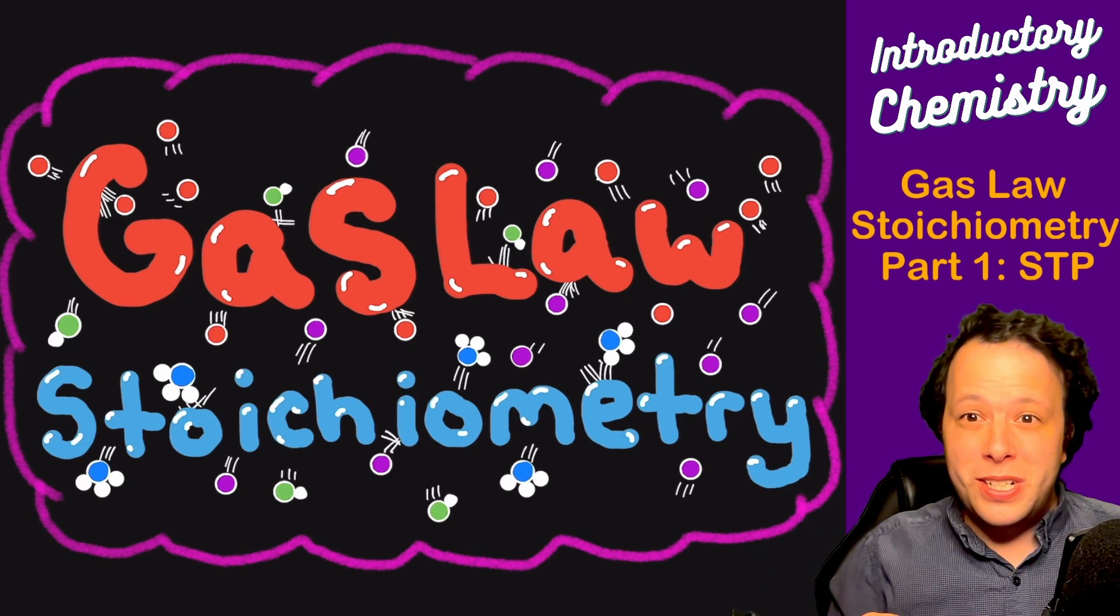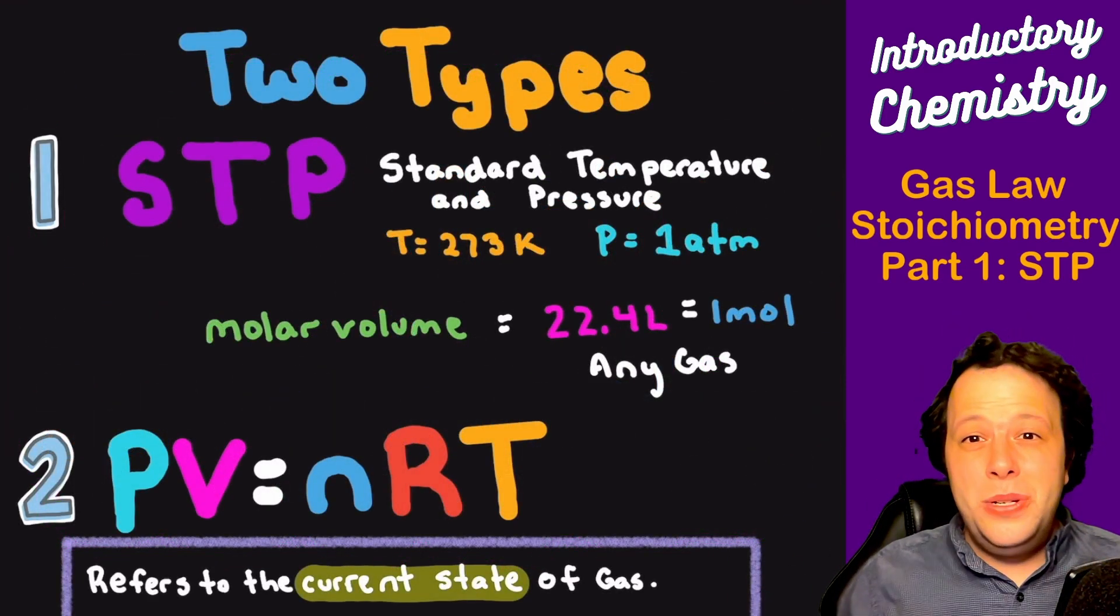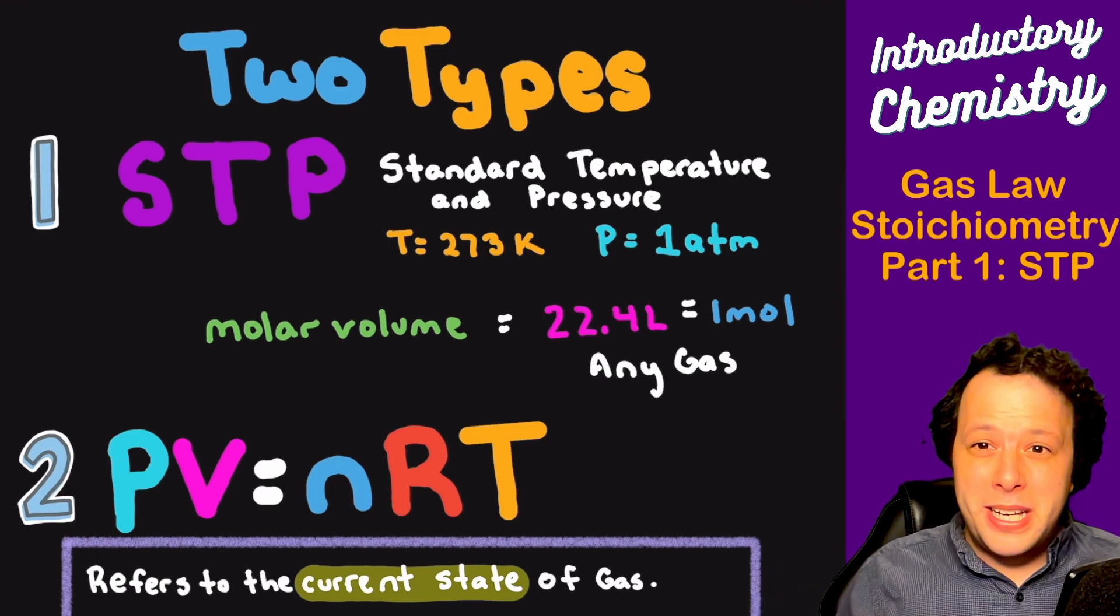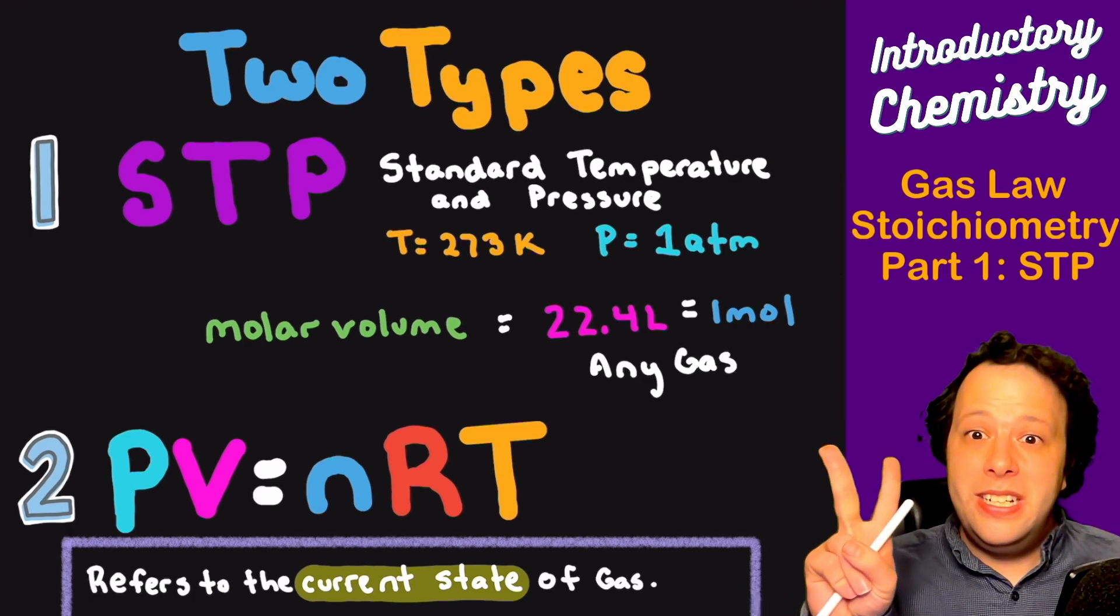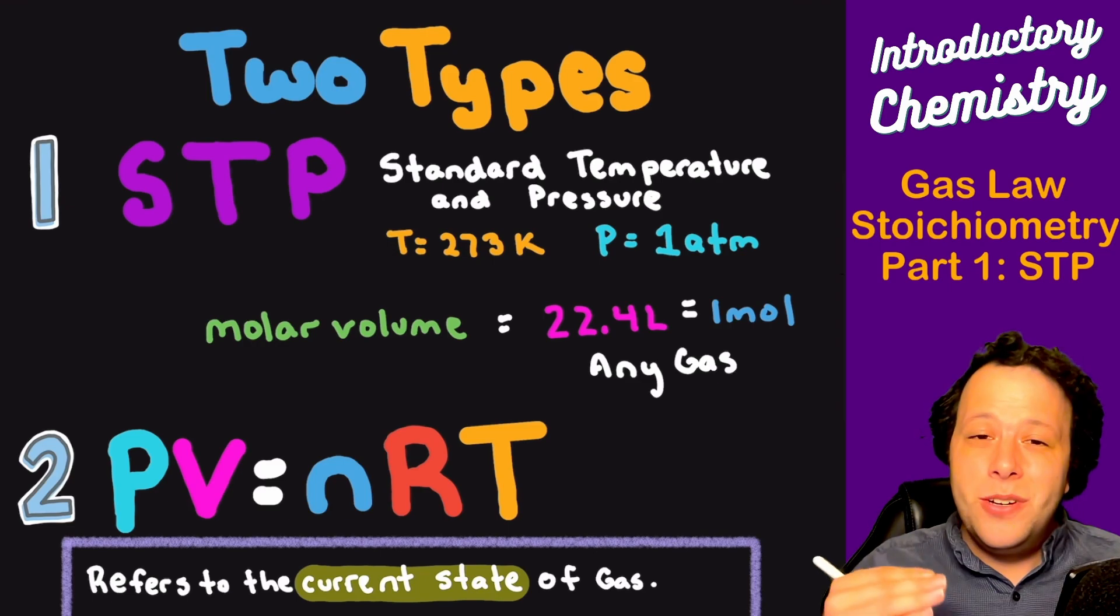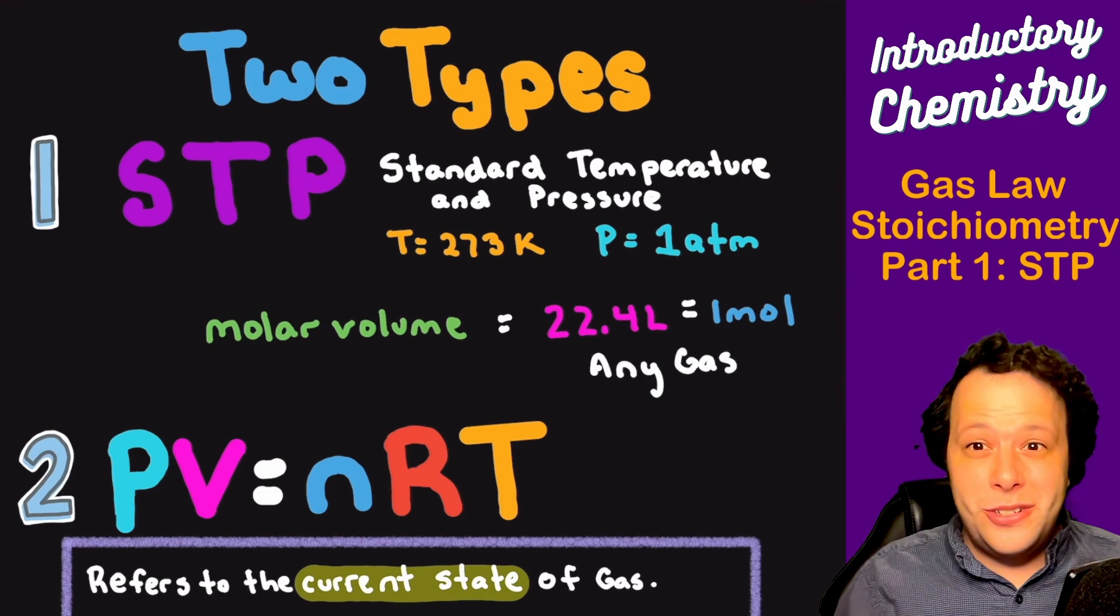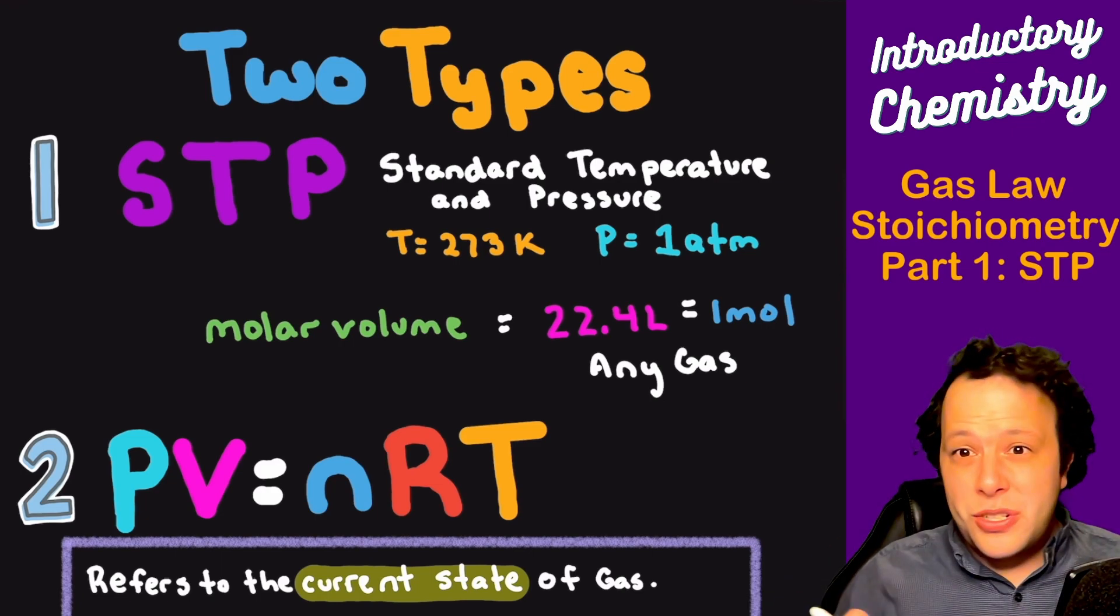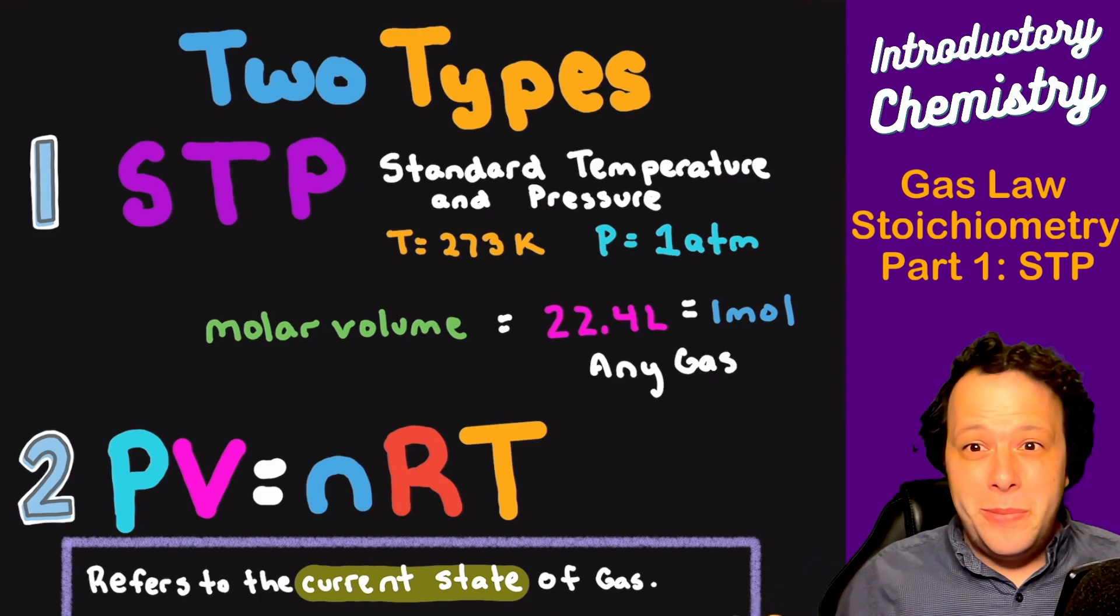We're going to start with the STP version of this video. First, we're going to be looking at the two different types of problems that you'll see with gas laws. There are dozens of formulas, but the good news is you really only need to know about two different types. You can scroll down below and when you scroll, it will help you go to the problem you need help with.